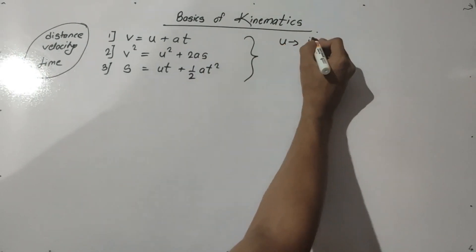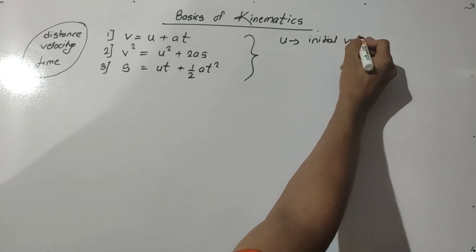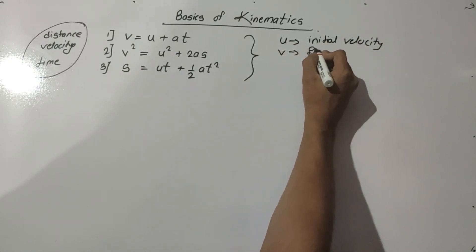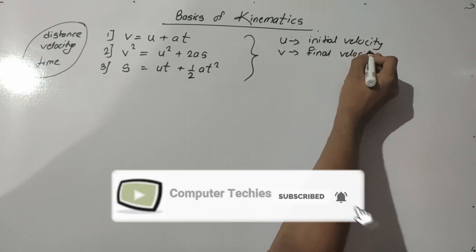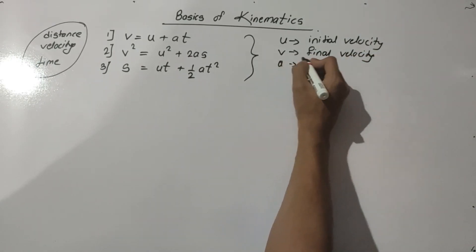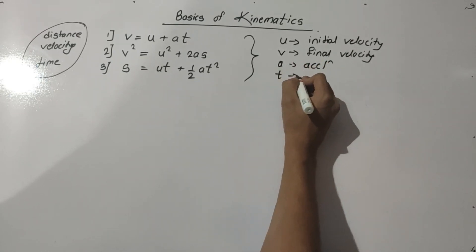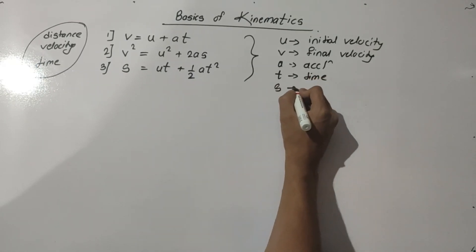Where U is the initial velocity, V is the final velocity, A is the acceleration, T is the time, and S is the distance.